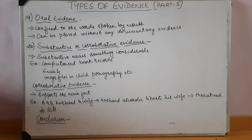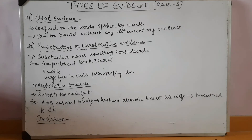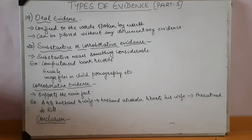The next and last types are substantive and corroborative evidence. In layman's language, substantive refers to something considerable, that is to have a strong base, whereas corroborative refers to something that needs to be more considerable. Substantive evidence refers to evidence introduced for what it helps to prove itself. Examples include computerized bank records in a credit card fraud case, emails in a cyber-stalking case, and image files in child pornography cases.